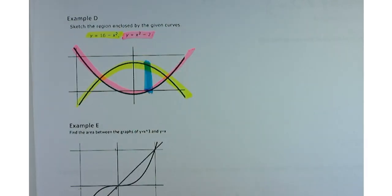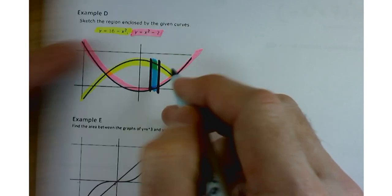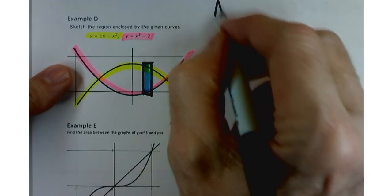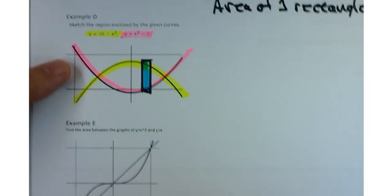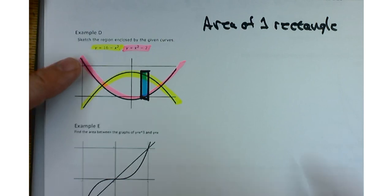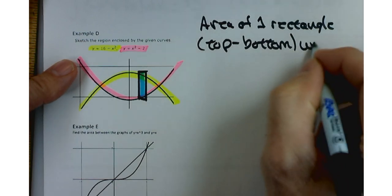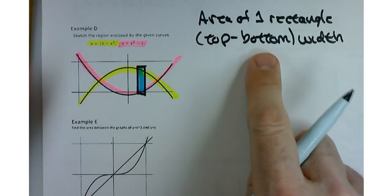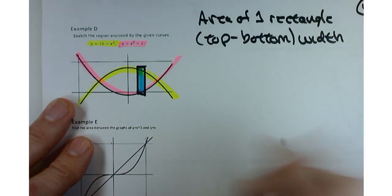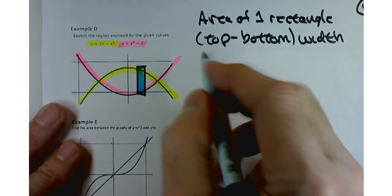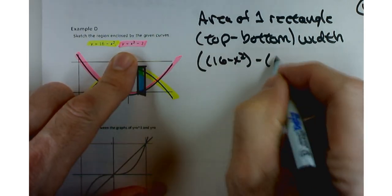So that area is going to be really just the area of a rectangle. Area of one rectangle is going to be your top function minus your bottom function, times the width. Your top function is the 16 minus x squared. Your bottom function is your x squared minus 2.